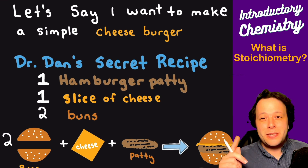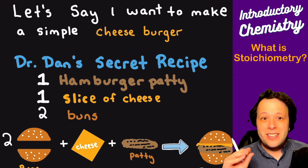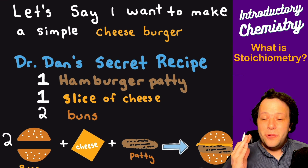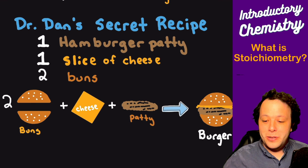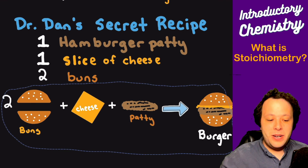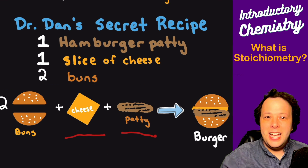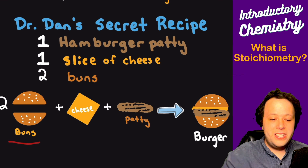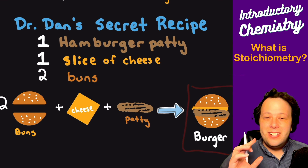My secret burger recipe is: one hamburger patty, one slice of cheese, and two buns — and you've got a burger. If we write this out like a chemical equation, we have two buns mixing with one piece of cheese and one patty, existing in a specific ratio: two buns, one slice of cheese, and one patty combine to make one burger.